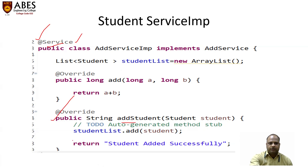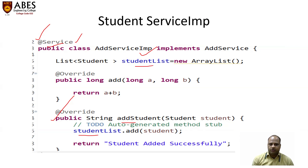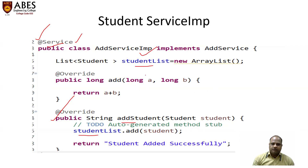The add student method will use the student list, which is an ArrayList. Whenever any user wants to add a student, it simply uses the add student logic to add the student to the list, and the user will get the message 'Student added successfully' in the browser. This is the whole story of the business logic we are going to add to the project. Now let's go to the project part and see the output of this logic.